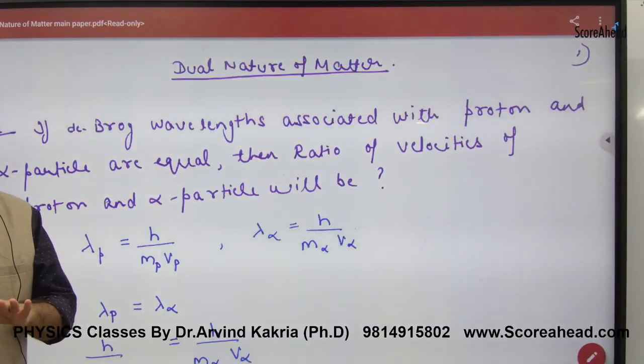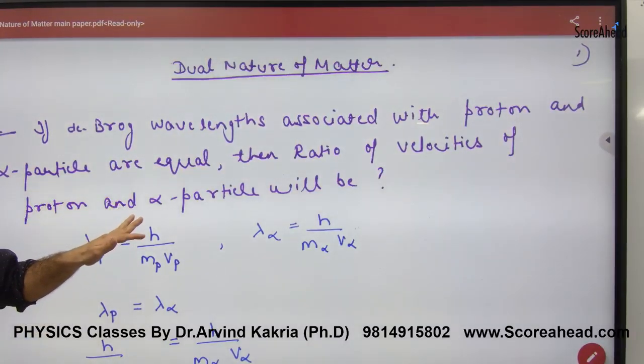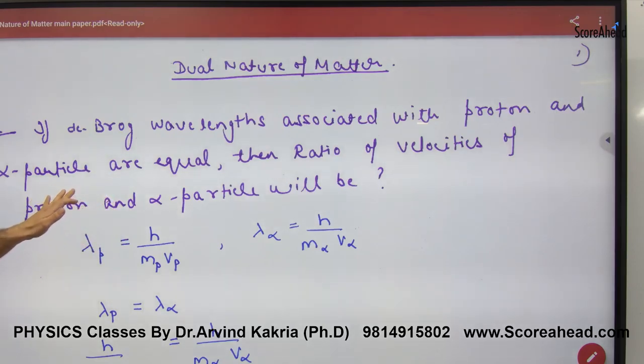This previous year paper question: de Broglie's wavelength associated with proton and alpha particle are equal. What is the ratio of velocities of proton and alpha particle? You have to find the ratio of velocities.